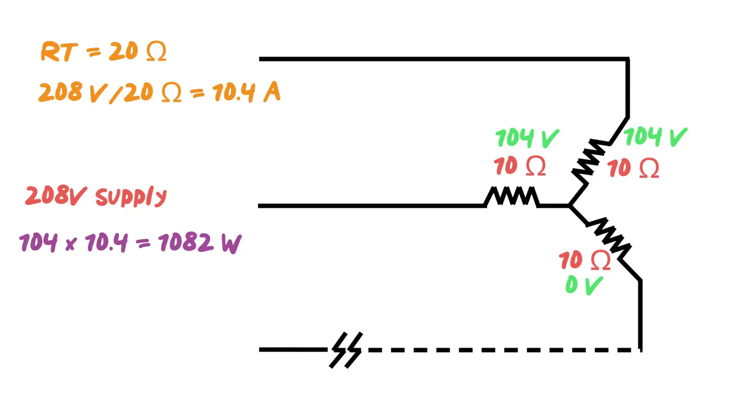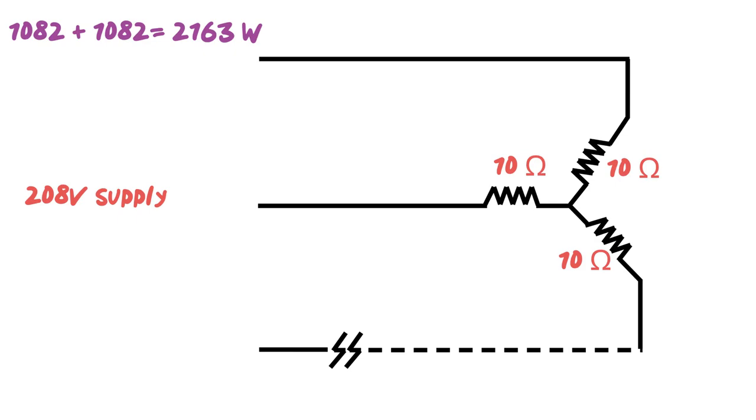Now we can figure out what the power being dissipated across each load is. 104 volts times 10.4 amps means that each load will see 1,082 watts of power. And the nice thing about power is, no matter if it's in series or parallel, you can go ahead and add it up. So each one of these is going to be 1,082 watts. So adding them up, you're going to end up with 2,163 watts in this circuit. So in this particular circuit, we're seeing that we are dissipating 2,163 watts, and again, this one's dissipating zero watts because it has an open at this point, and so nothing will get through.